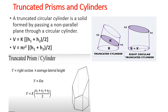Truncated Prism and Cylinders. Truncated circular cylinders are solids formed by passing a non-parallel plane through a circular cylinder. Volume equals pi times (H1 plus H2) over 2. For the truncated prism, volume equals the right section times the average lateral height.